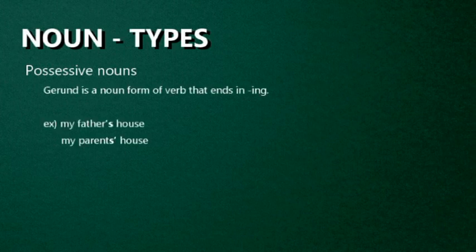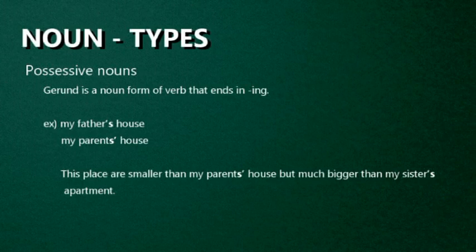Next one: Possessive Nouns. A possessive noun is a noun followed by an apostrophe and the letter S to indicate possession. For example: my father's house — father's with apostrophe S indicates possession; the house belongs to the father. To indicate possession with a plural noun ending in S, just add the apostrophe after the S and don't add any extra S. For example: my parents' house — parents is the plural form and already ends in S, so we just add an apostrophe. For example: This place is smaller than my parents' house but much bigger than my sister's apartment — parents is plural so only apostrophe is added, while sister is singular so apostrophe S is used.